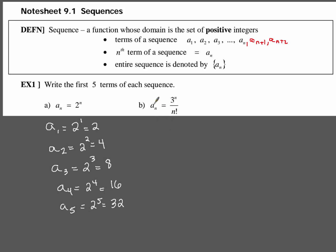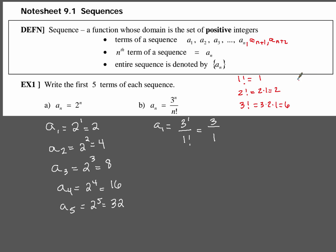For example b, our term is defined by 3 to the n over n factorial. Our first term is 3 to the first over 1 factorial — 3 over 1, which is 3. For the factorial, you should have these memorized: 1 factorial is 1; 2 factorial is 2 times 1, or 2; 3 factorial is 3 times 2 times 1, which is 6; 4 factorial is 4 times 6, which is 24; 5 factorial is 5 times 24, which is 120; and 6 factorial is 6 times 120, or 720.